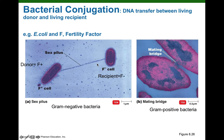The donor then disassembles the pilus, shortening it and bringing the recipient into close physical contact. At that point, the base of the sex pilus acts almost like a hypodermic syringe and needle. The donor is going to transfer a copy of donor DNA into the recipient, and we'll see there are some different versions of what DNA can be transferred. This is conjugation in gram-negative bacteria.